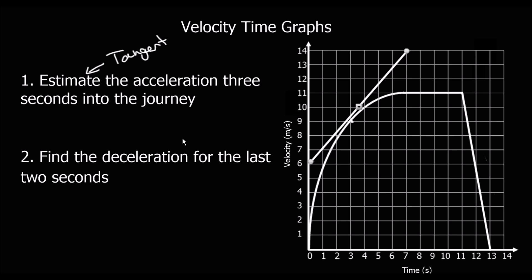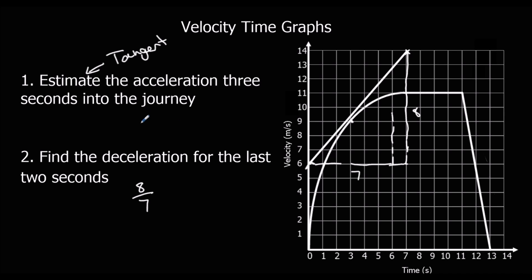Looking at the gradient of the tangent: for every one across, how much does it go up? The tangent goes across 7 and up 8. So 8 divided by 7 gives an estimated acceleration of 8 over 7 metres per second squared.